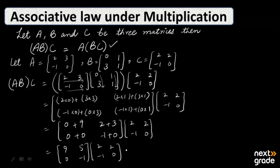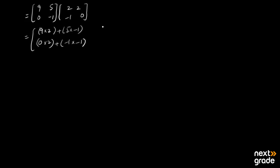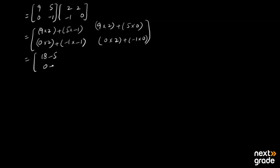We will multiply this matrix by the C matrix. The answer requires us to multiply: 9 by 2 and 5 by minus 1, similarly 0 by 2 and minus 1 by minus 1. For the second column: 9 multiplied by 2 plus 5 multiplied by 0, and 0 multiplied by 2 plus minus 1 multiplied by 0. The products give us: 18 minus 5, 0 plus 0. So we get 13, 18, and 0 — this is the left-hand side result.